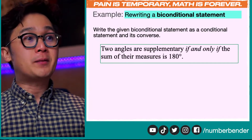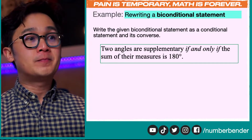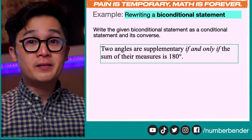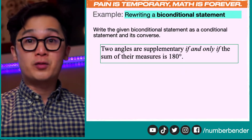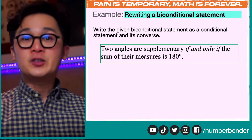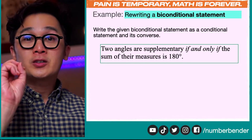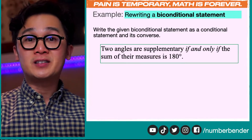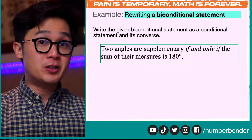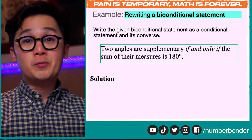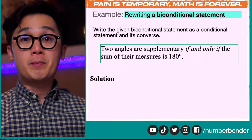An example of a biconditional statement is: two angles are supplementary if and only if the sum of their measures is 180 degrees. This is an example of a biconditional statement because we see the verbal phrase 'if and only if.' To understand this better, let's try to write two different conditional statements out of this biconditional statement — its conditional and its converse.